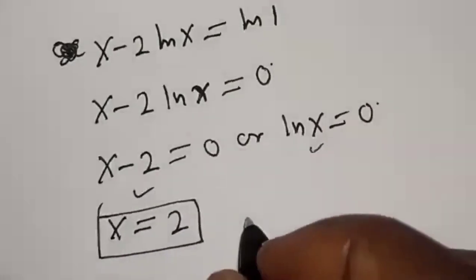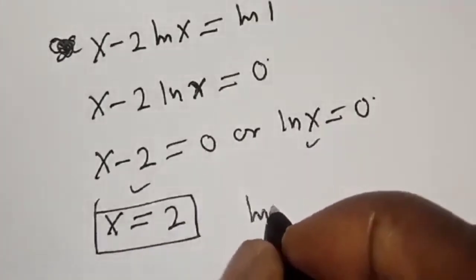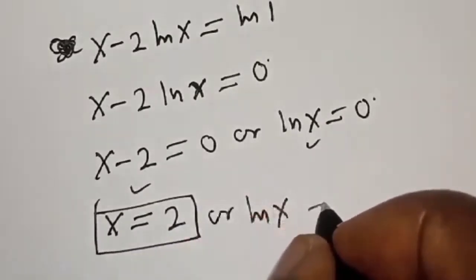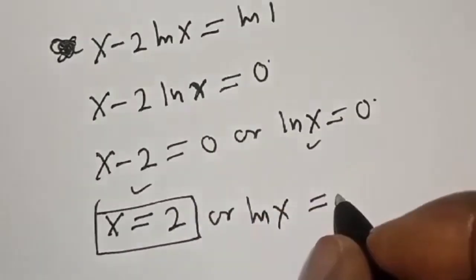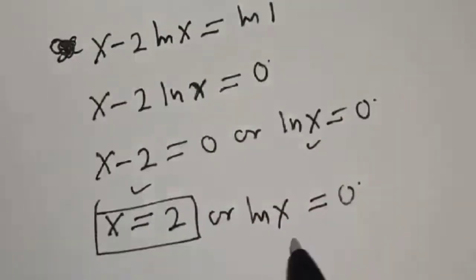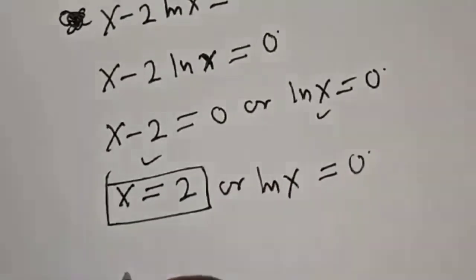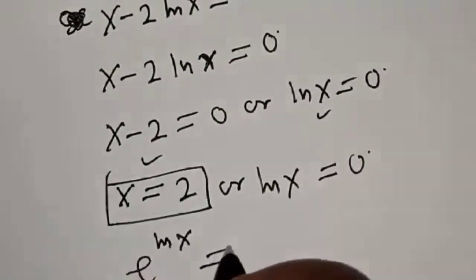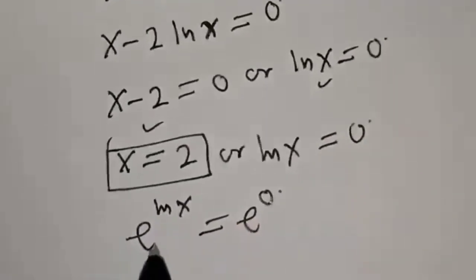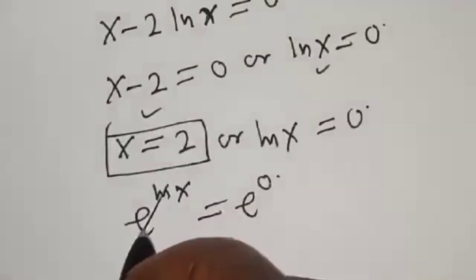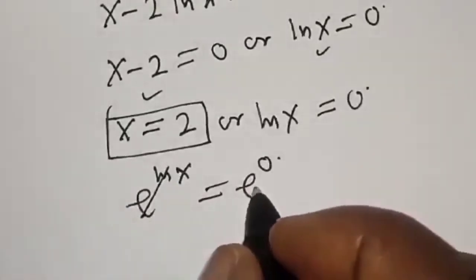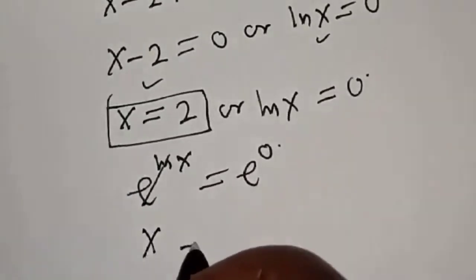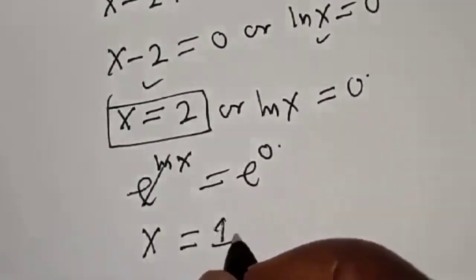From the second case, natural log of s equals 0. Introducing e, we have e raised to power natural log of s equals e raised to power 0, which equals 1. Therefore s is equal to 1. That is the second value of s.